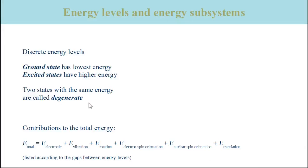This degeneracy can be lifted by a perturbation, for example by interaction with an external influence. An example are the energy levels of the nuclear and electronic spins. In the absence of an external magnetic field they are degenerate, meaning the energy does not depend on spin orientation. However, when an external magnetic field is applied, the degeneracy is lifted and the different spin orientations have different energies. One says that the magnetic field splits the spin energy levels.